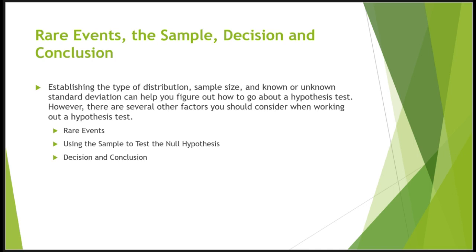If alpha is less than or equal to the p-value, we do not reject the null hypothesis, meaning the results are not significant and there is not sufficient evidence to support the alternative hypothesis. Not rejecting the null hypothesis does not mean it is true — it simply means the data have failed to provide sufficient evidence to cause serious doubt about it. After making your decision, you write a thoughtful conclusion about the hypotheses in terms of the given problem.